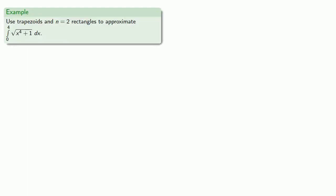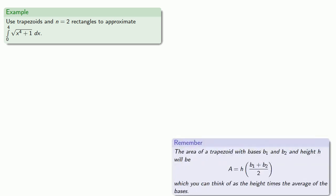So for this it's helpful to remember that the area of a trapezoid with bases b1 and b2 and height h will be given by the formula. And you can think about this as the height times the average of the two bases.